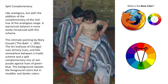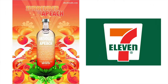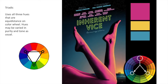Split-complementary is like analogous but with the addition of the complementary mid-hue. So if you're using red-purple, red, and red-orange, you would use green across from it on the color wheel. This painting by Mary Cassatt uses tertiary hues and falls somewhere between a triadic scheme and a split-complementary. Here's another example — an Absolut Vodka ad and the 7-Eleven sign. Triadic color uses all three hues that are equidistant on the color wheel, with hues varied in purity and tone — as in this Inherent Vice movie poster based on the Thomas Pynchon novel.